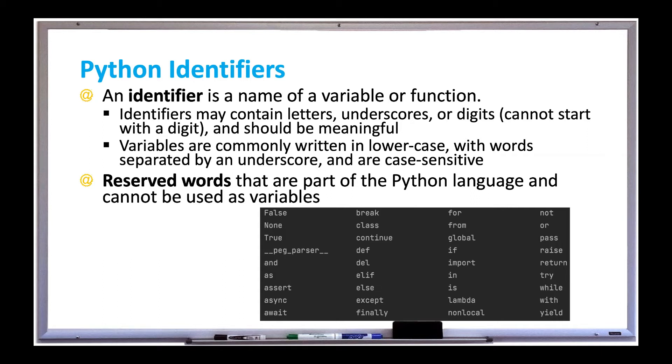It's just a word that describes something, like the word name to represent a person's name, or age to represent a person's age. These identifiers may contain letters, underscores, or digits, but they cannot start with a digit, and they should be meaningful.